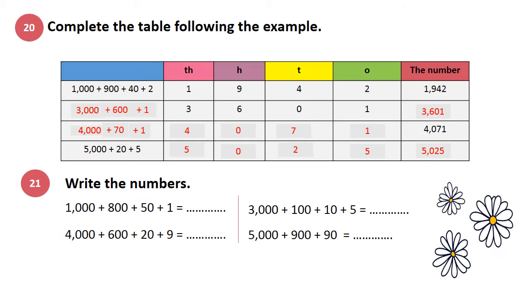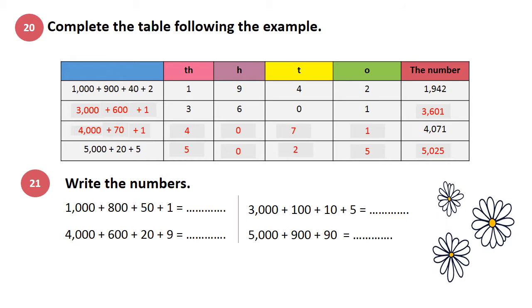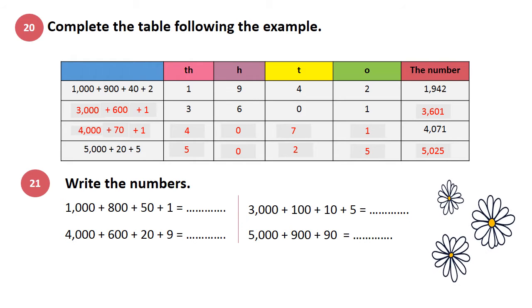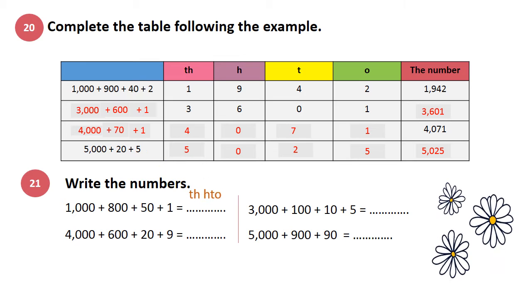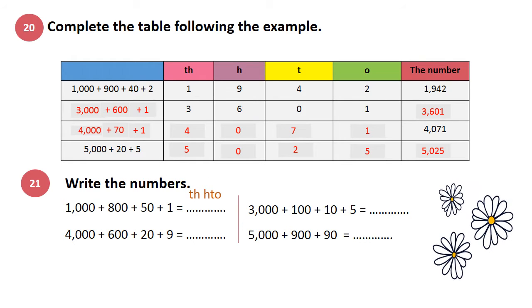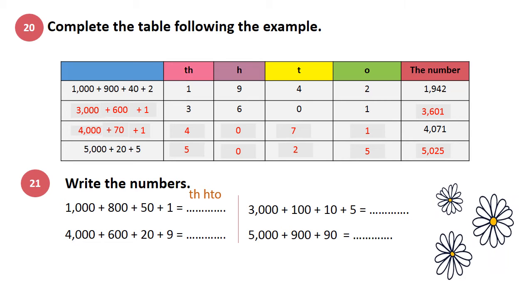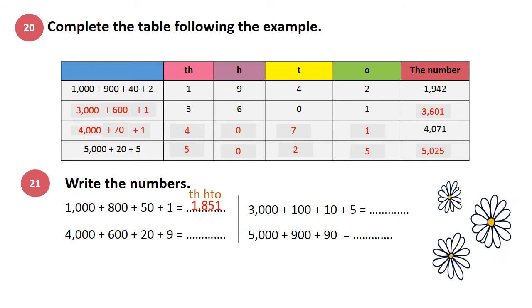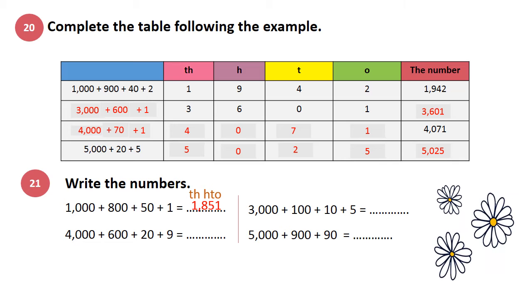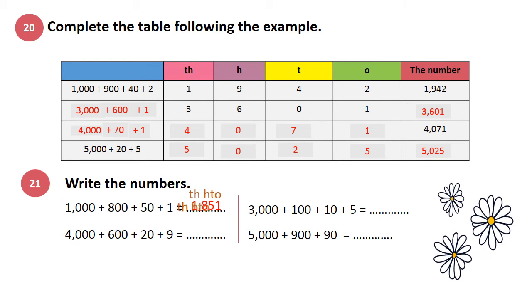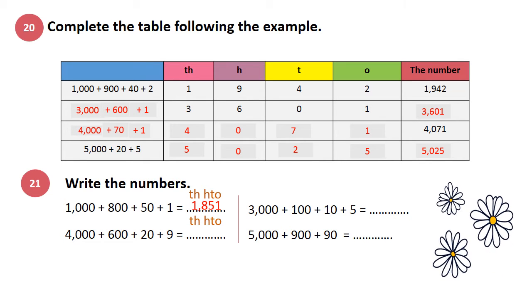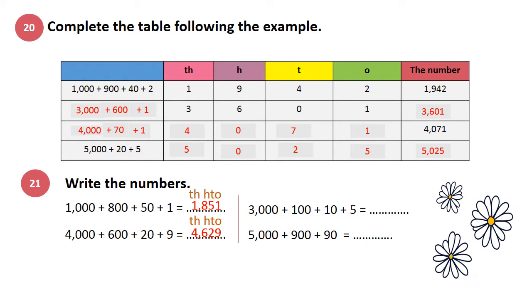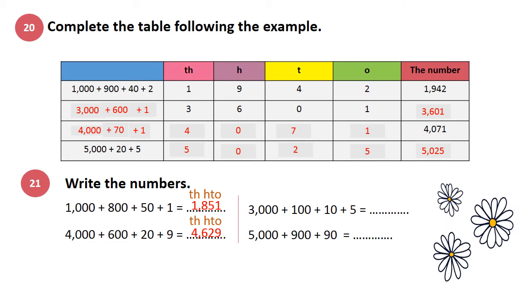Exercise 21: Write the numbers — which means I have to compose the number. 1000 plus 800 plus 50 plus 1. 1 is 1s, 5 is 10s, 8 is 100, and 1 is 1000. So 1,851. Let's continue. 4000 plus 600 plus 20 plus 9. 9 is 1s, 2 is 10s, 6 is 100, and 4 is 1000. So 4,629.